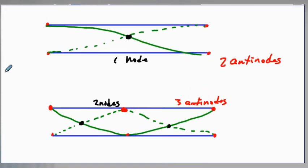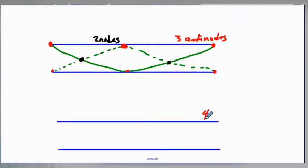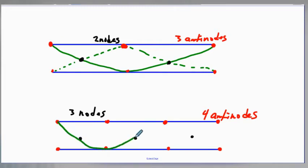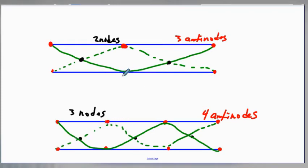The first one had two antinodes, the next one had three antinodes, so I predict this one will have four antinodes — one at each end and two in between, plus their mirror images. We'll also have three nodes. So there we have our nodes and antinodes in a cylinder with two open ends, compared to one open end and one closed end.